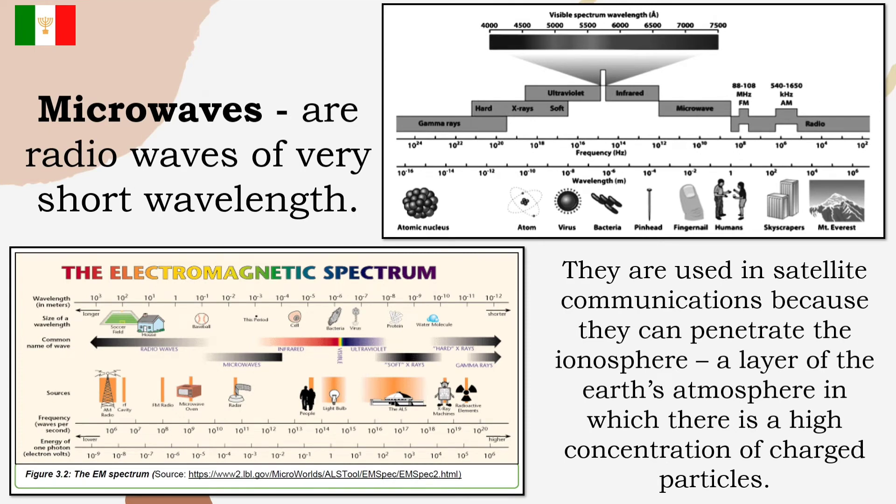Microwaves. Microwaves are radio waves of very short wavelength. They are used in satellite communications because they can penetrate the ionosphere. This is a layer of the Earth's atmosphere in which there is a high concentration of charged particles. Microwaves have a range of applications, including communications, radar, and perhaps, best known by most people, cooking. Electromagnetic radiation is transmitted in waves or particles at different wavelengths and frequencies. This broad range of wavelengths is known as the electromagnetic spectrum.